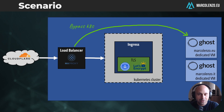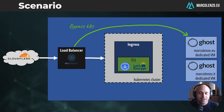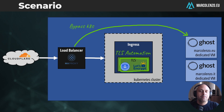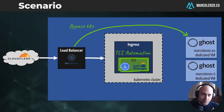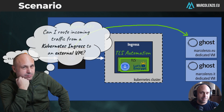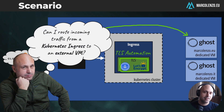Because right now I direct all traffic to the Kubernetes cluster. And the other problem is that by bypassing Kubernetes, I was losing the automated certificate management that I have set up with cert manager, Let's Encrypt, and in my case also Cloudflare. So that was the moment I wondered: is there a way to direct the traffic from a Kubernetes ingress to an external application?